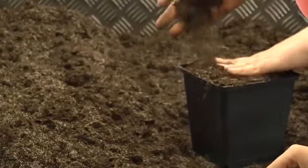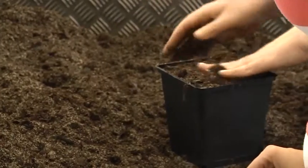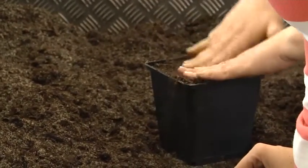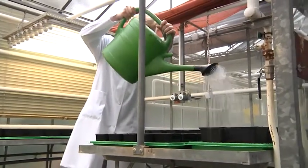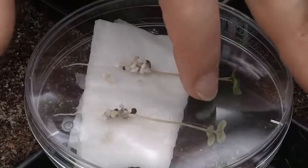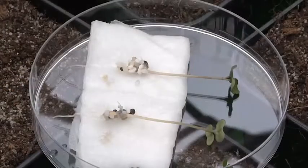The potting compost is filled into seed trays, watered, and treated with insecticide. Finally, the seedling can be planted gently into the potting compost.